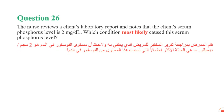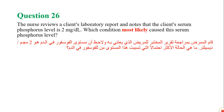Question number 26: The nurse reviews a client's laboratory report and notes that the client's serum phosphorus level is 2 milligrams per deciliter. Which condition most likely caused this serum phosphorus level?